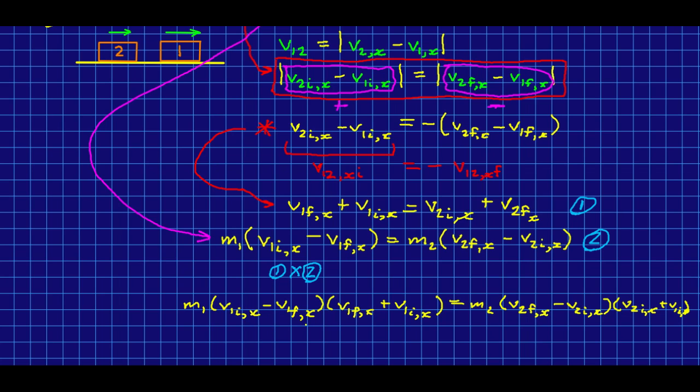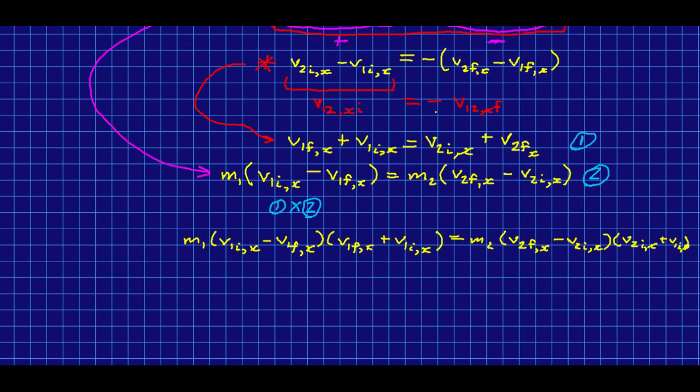And now if I just multiply those out, notice there are going to be cross terms that are going to cancel because of the way the negatives work. So there's a negative v1f v1i and a positive v1f v1i, and so those will cancel and so on. So what I end up getting is that all of the cross terms cancel and I'm only left with v's squared.